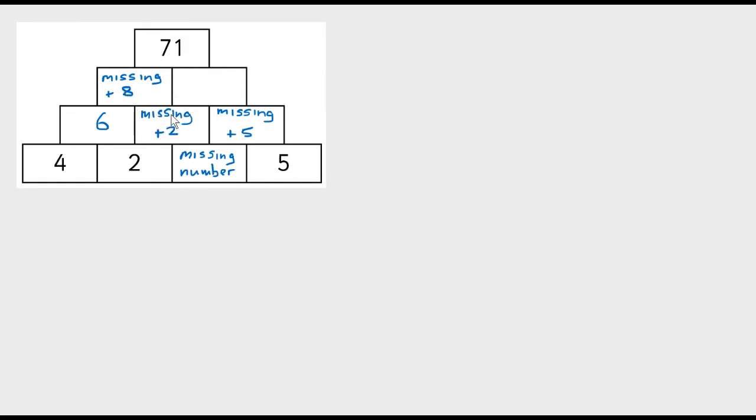This one here I've got my missing number plus 2 plus my missing number plus 5, so that's my missing plus another one of my missing numbers, and then plus 2 plus 5 makes plus 7.